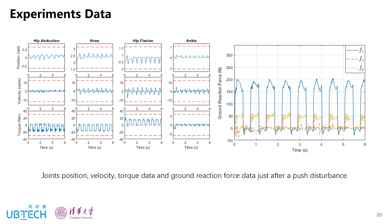Here shows the experiment data of joints and ground reaction force just after a push disturbance. We can see that all the joint position, velocity, and torque are well within the bounds represented by the red dashed line. And the ground reaction force also satisfies the friction cone constraints.